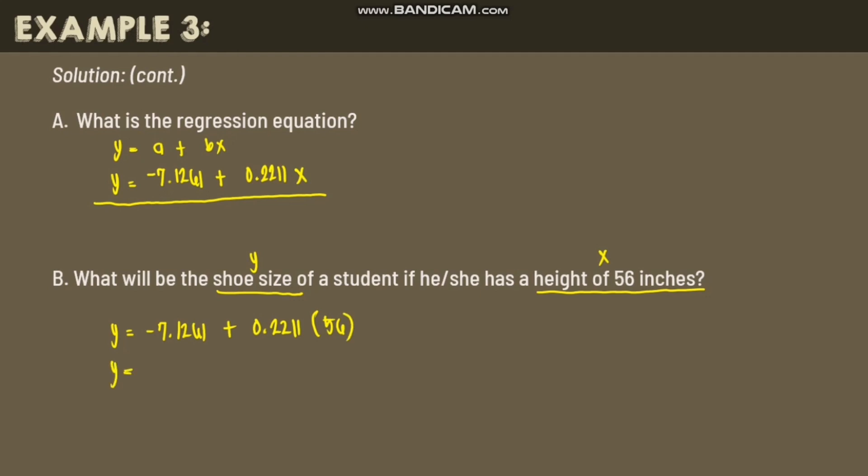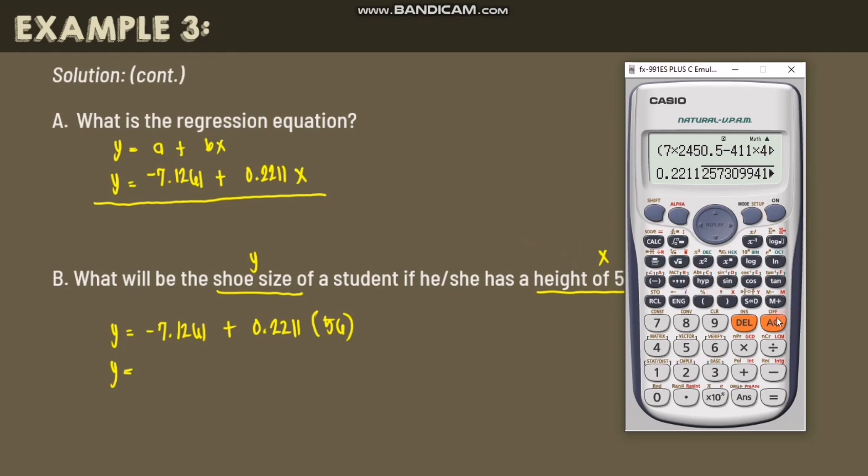Let's compute the value. Let's see what will be the shoe size of a student if he or she has 56 inches in height. We have negative 7.1261 plus 0.2211 times 56. So we have 5.2555.